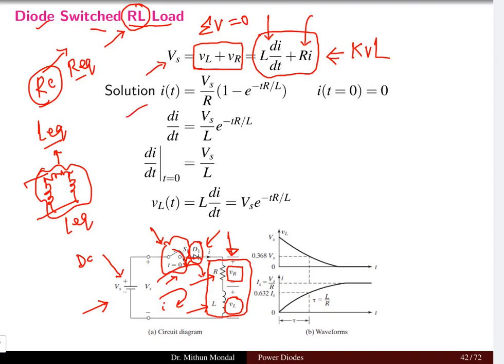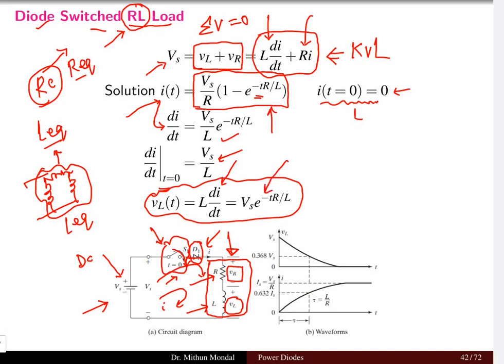The solution of the current i(t) we know that it will come in the form Vs by R times 1 minus e to the power minus tR by L. The voltage of the inductor is given by L di by dt where the current expression is already obtained, which gives Vs e to the power minus tR by L.